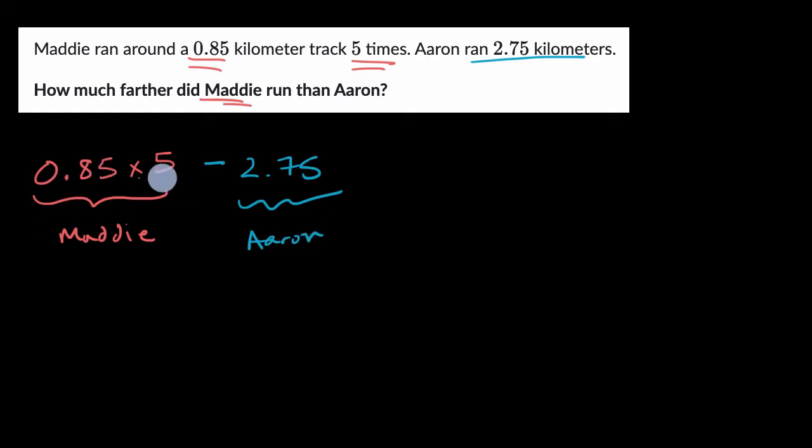Now, order of operations would tell us to do the multiplication first, but just to make doubly sure, we can put some parentheses around there. So let's first figure out what 0.85 times five is. So 0.85 times five. And I'm going to do the same thing. I'm first just going to think about what 85 times five is.